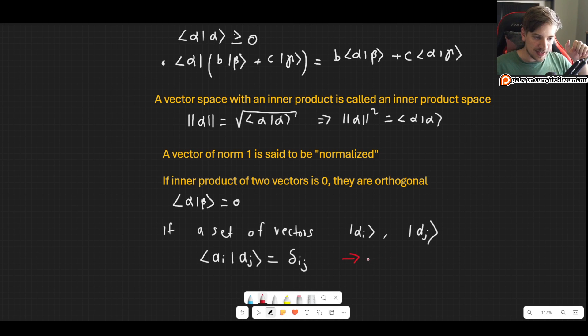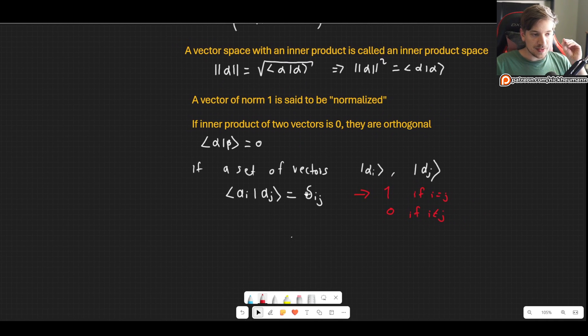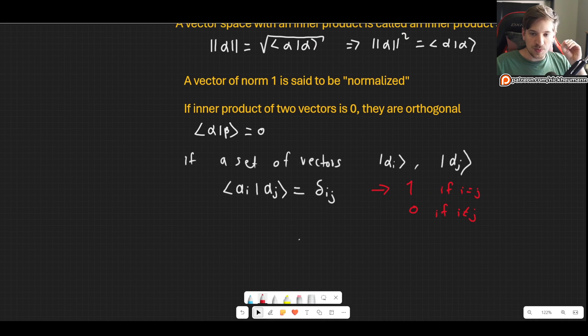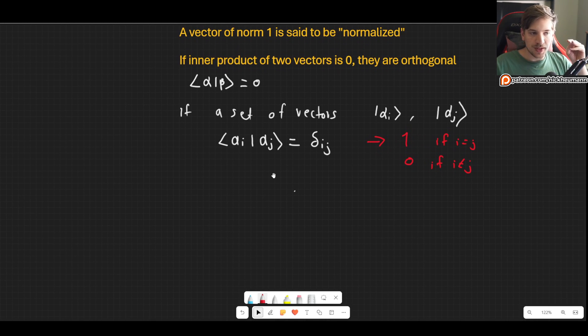This delta is crucially important. This delta has a value of 1 if i is equal to j, so if both vectors are the same, or 0 if they are different. If they are the same, it has a value of 1 and they are normalized. If they are different, it has a value of 0 and they are orthogonal. That's a very compact way to write orthonormality. The Kronecker delta is going to be used so incredibly often.